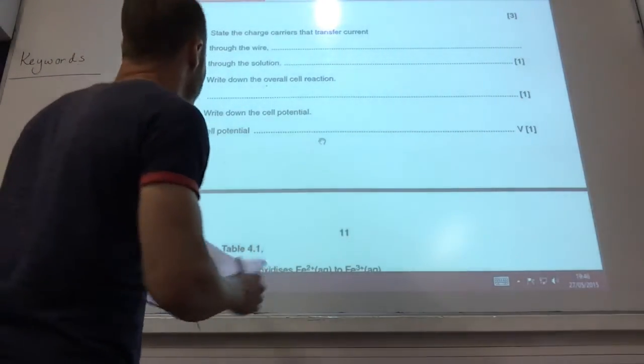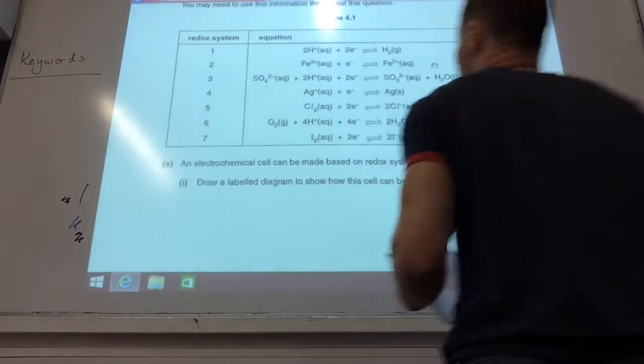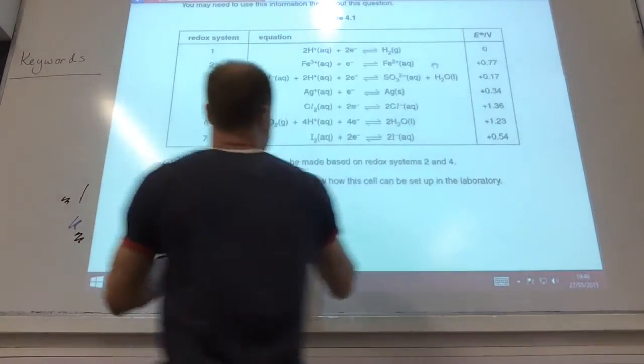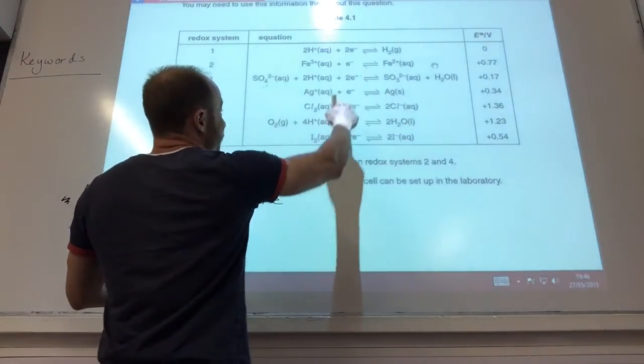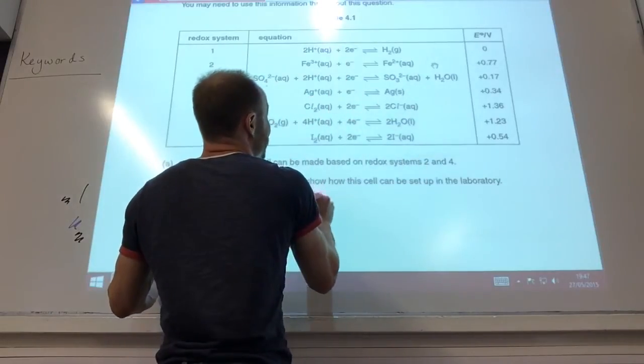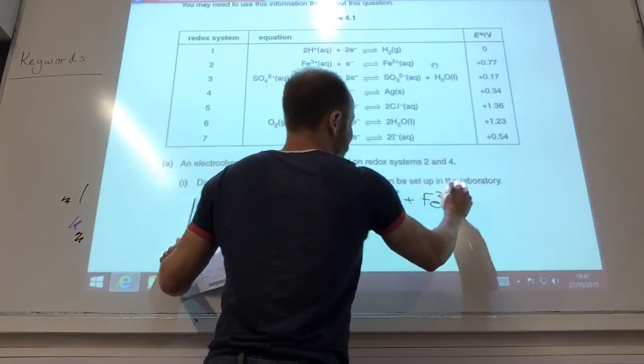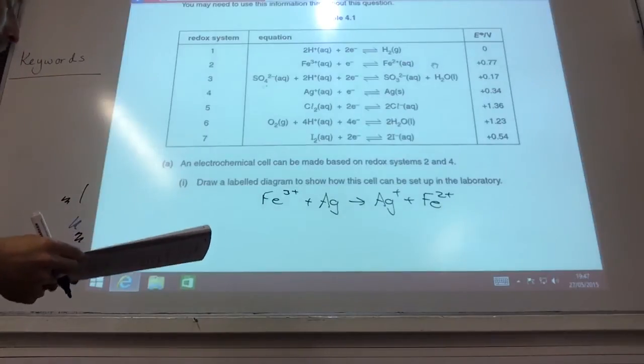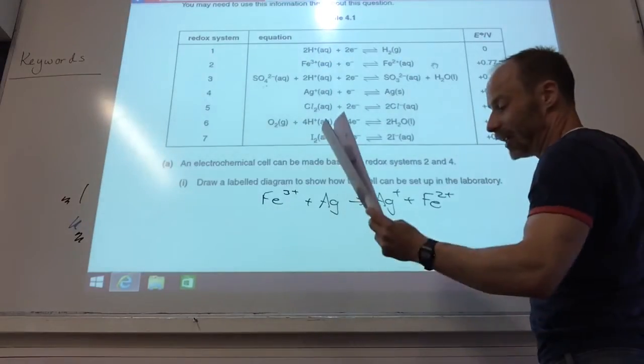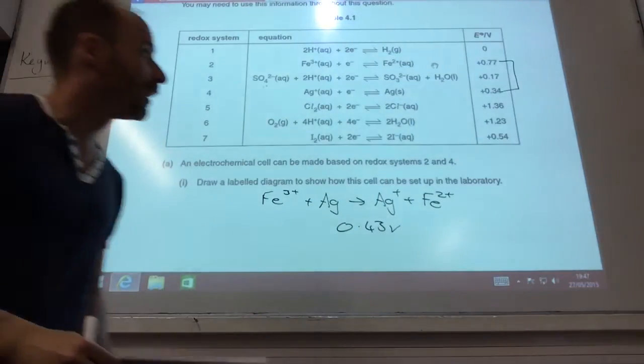Right down the overall cell reaction. Well, if we have a look, going back to the table, it was 2 and 4. This one's the most positive, so that's going to go that way. I've got Fe, oh you notice quite nicely that they both just involved one electron, so I don't think it's timed anything. So we said that's going to go that way: Fe3+ plus silver is going to go to silver plus, plus Fe2+, like so. And then it says, what's my cell potential? The cell potential is the difference between those two, which is going to be 0.43 volts. 0.77 minus 0.34.